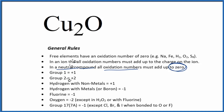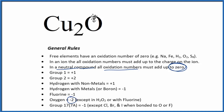Copper won't be found in our rules here because it's a transition metal, so it can have different oxidation states depending on what it's bonded to. In this case, it's bonded to oxygen, and oxygen is always minus two, with a few exceptions. So the oxygen is minus two.